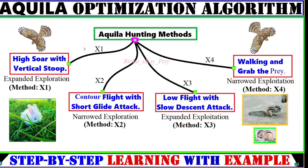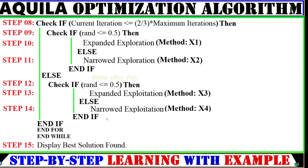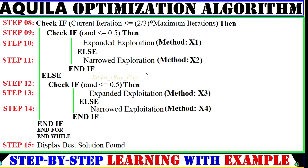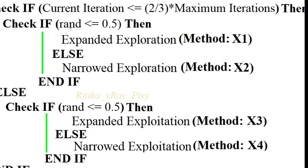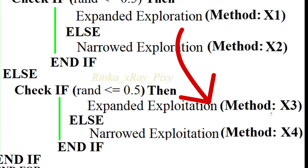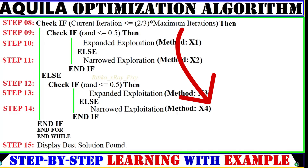In this algorithm we have four methods used for hunting by the Aquila, and we use these four methods to update agent positions in the search space. If the condition is true, the first method is applied; else the second method. If the condition is not true, the third and fourth methods are used.